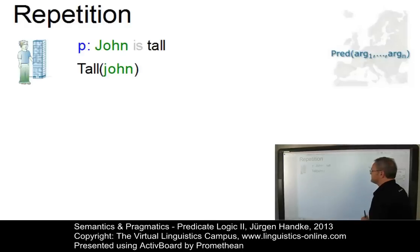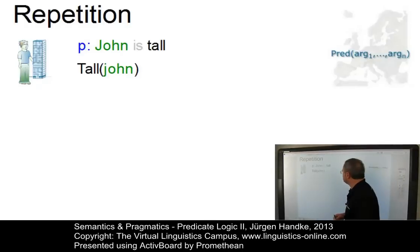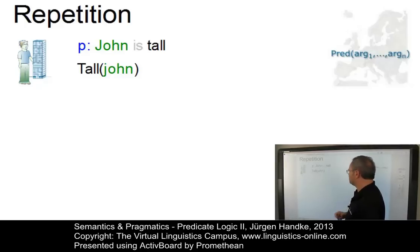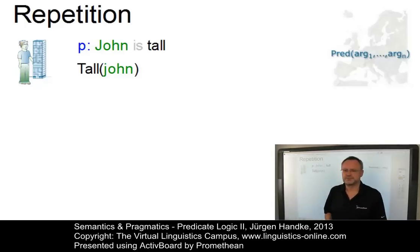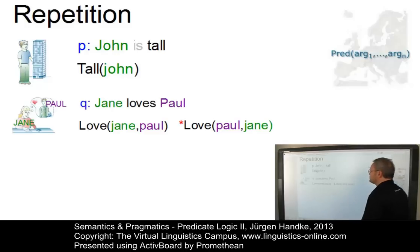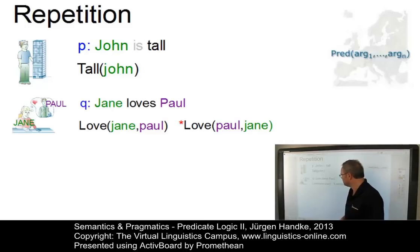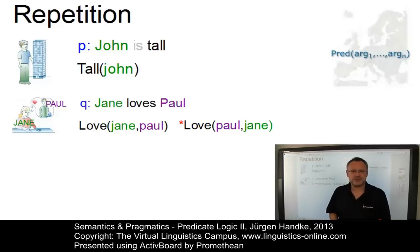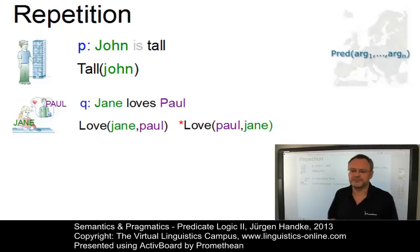Here is the first. The proposition 'John is tall' can be converted into a simple predication with a one-place predicate, Tall, the predicate, and John, the argument. Or take this proposition, 'Jane loves Paul,' where the predication contains a two-place predicate, love, and two arguments, namely Jane and Paul.